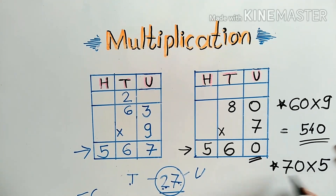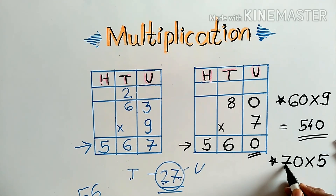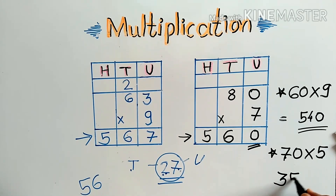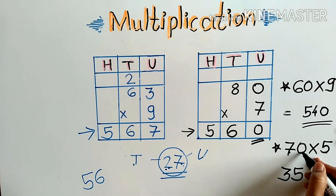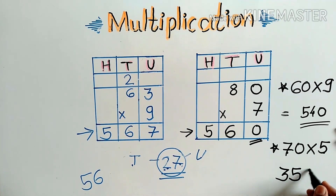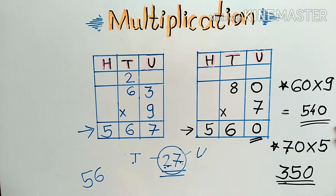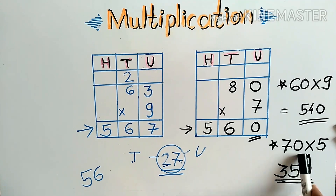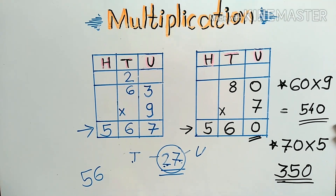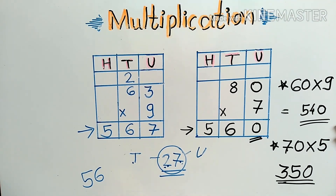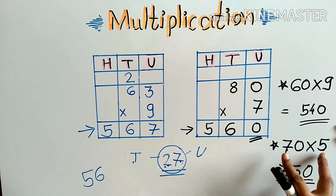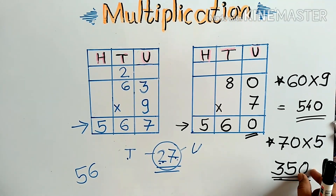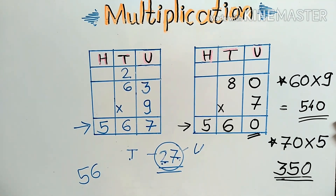Similarly, 70 multiplied by 5: 5 sevens are 35, and we put the 0 at the end to get 350. In this way, when there is a 0 in the number, we only multiply the non-zero digits and place the 0 at the end to get our answer.